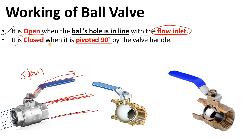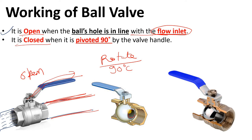When the handle is perpendicular — when it is pivoted by the ball handle — it means when you rotate it 90 degrees, then it will be closed. This hollow section will turn and this portion will be in front, and this portion will restrict the flowing fluid from flowing. That is the working of the ball valve.